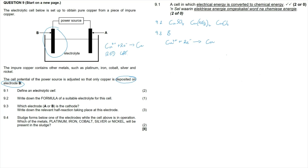Question 9.4: a sludge forms below one of the electrodes while the cell is in operation. Which of the metals — platinum, iron, cobalt, nickel, or silver — will be present in the sludge? We answer this question in two ways.